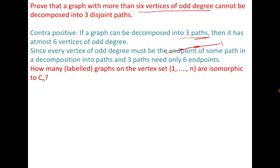The total number of permutations is n factorial. If I talk of C4, the total number of permutations is 4 factorial, which is 24. We can easily write them down: 1, 2, 3, 4; 1, 2, 4, 3; and so on.